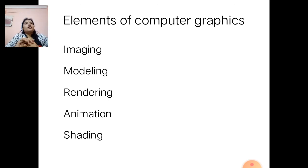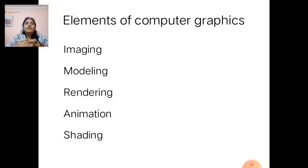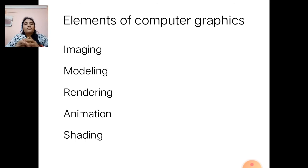Now we discuss about the elements of graphics. Computer graphics has 5 elements. The first one is imaging, then modeling, rendering, animation, and setting.